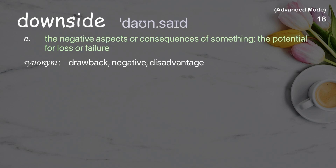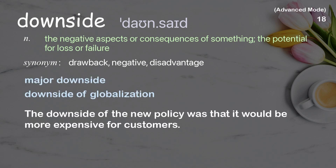Downside: The negative aspects or consequences of something; the potential for loss or failure. Examples: Major downside. Downside of globalization. The downside of the new policy was that it would be more expensive for customers.